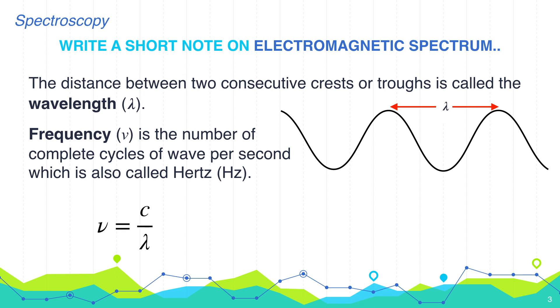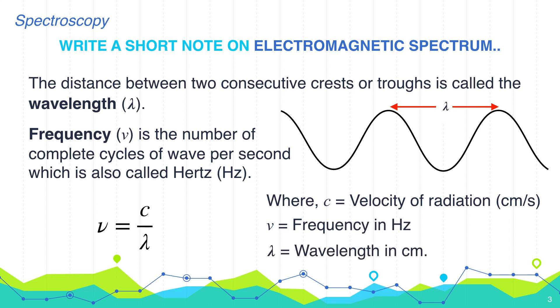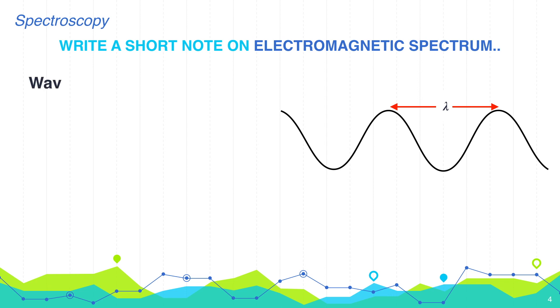Frequency and the wavelength of radiations are related by the equation nu is equal to c by lambda where c is the velocity of light, nu is the frequency in hertz and lambda is the wavelength in centimeter. Next comes wave number. Wave number is defined as the number of waves per centimeter in vacuum.